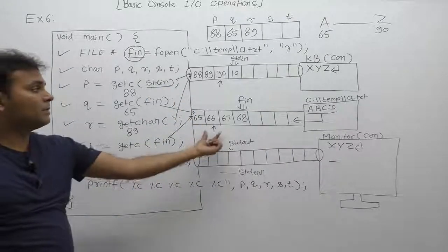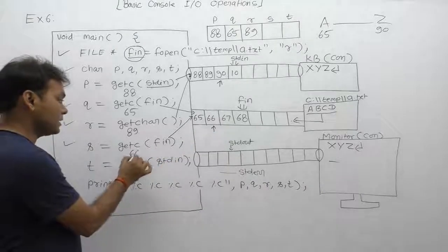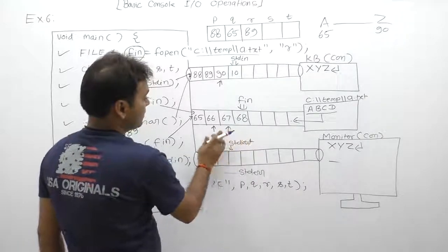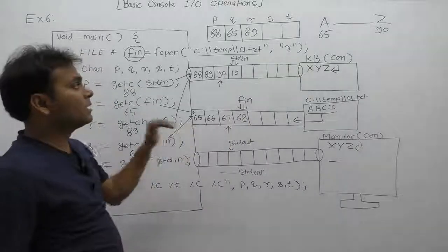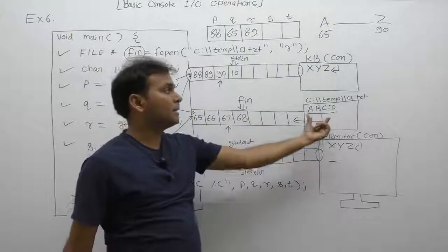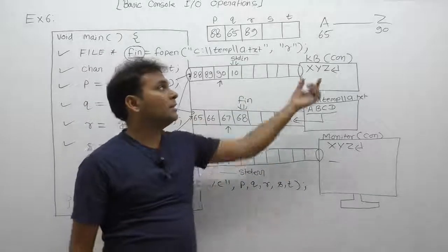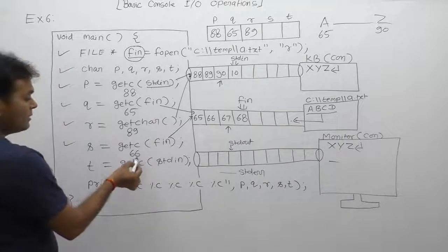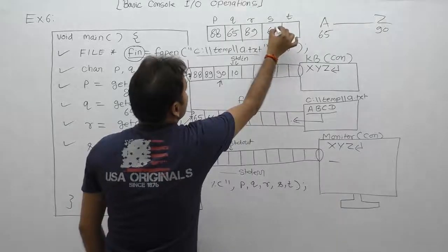Again call, next time getc function third case, fourth case call. After completing this, s equals to getc fn. getc through data again this from fn. fn second current place found 66. Therefore it will return 66. After reading 66, cursor will move to the next byte of the buffer pointer fn. fn data reading means indirectly from file. stdin data reading means indirectly console device buffer. 66 assigned to the variable s. Value of s becomes 66.